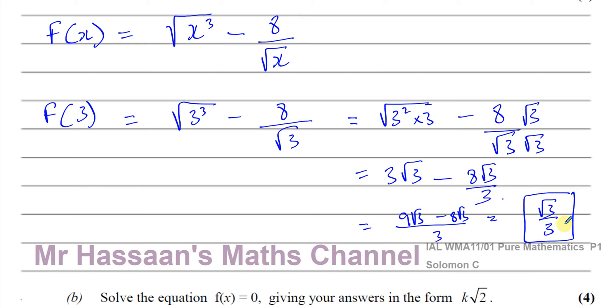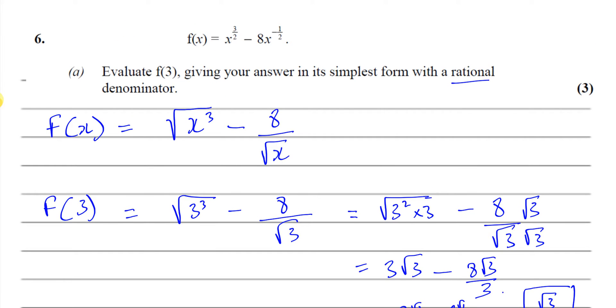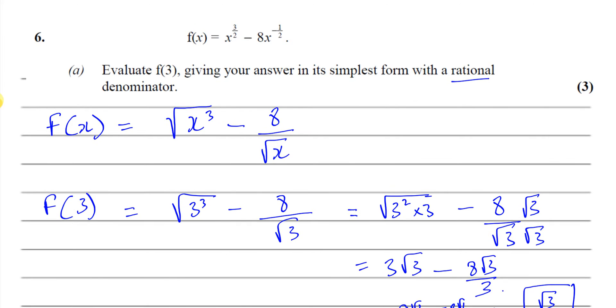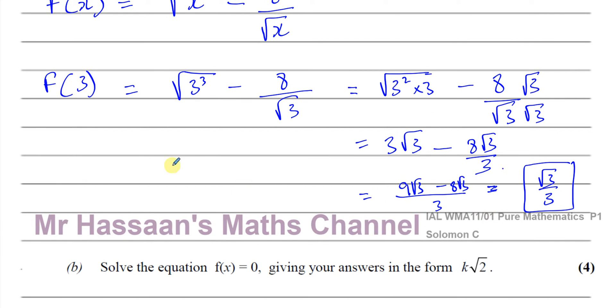So there's the answer. We must simplify from that stage — you can't leave it unsimplified because these are like terms. So we have the answer in its simplest form with a rational denominator: root three over three. That's the answer to Part A.